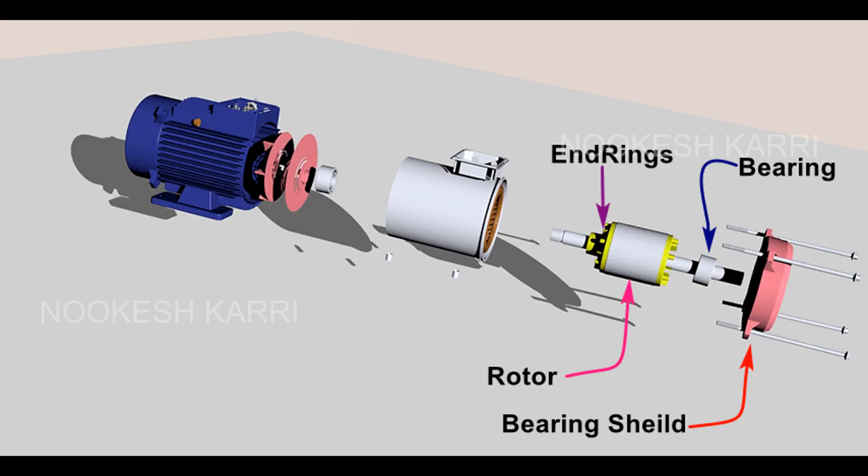End rings. All these rotor bars are joined at each end by metal rings called end rings. It completes the rotor circuit. The shaft transmits the torque to the load. This shaft is made up of steel.